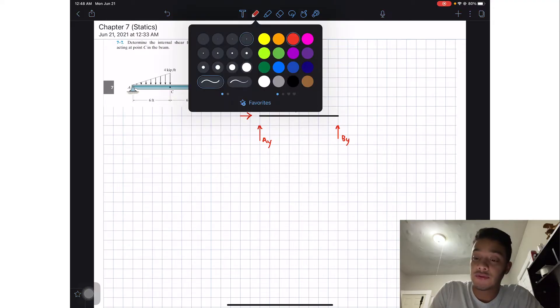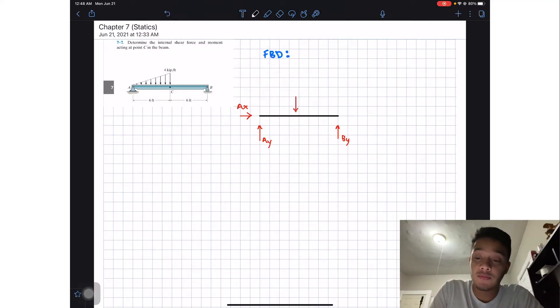If we want to know how much that is, we'll find out that this force, I'm going to call it triangle, will be the area of a triangle so it will be one half of the base, so 6 times the height which will be 4, and this will give us 12 kips. So now we know that this value is 12 kips.